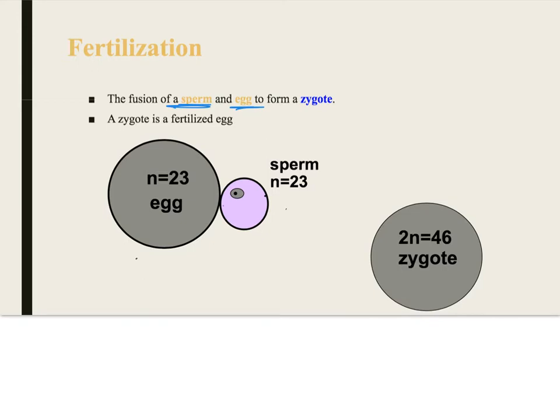So you've got your egg cells which are 23, your sperm cells are 23, and then they make a zygote which is 46. And that zygote then splits and divides and divides and divides and essentially comes up with a new person.